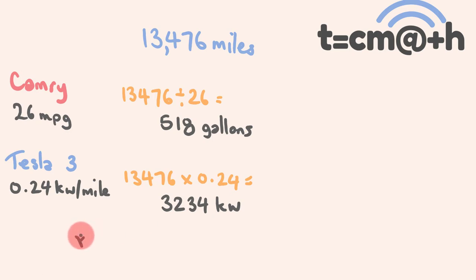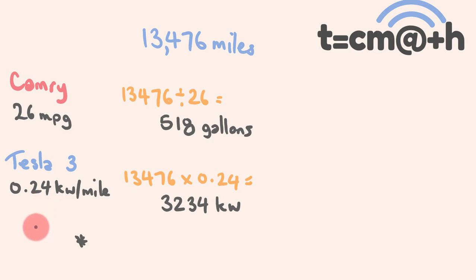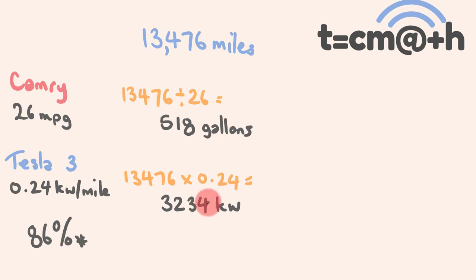Just a little asterisk here — something to be aware of. This is something I've been reading about Teslas: when you charge a Tesla, only 86% of the electricity that you put in from the wall actually goes into the battery and runs the wheels of your car. So there's only 86% efficiency there, meaning you're actually going to use a bit more than this — this figure is only 86% of the electricity you will actually use.